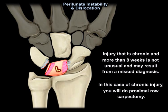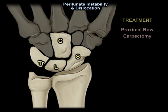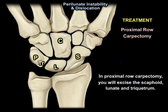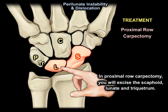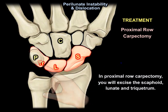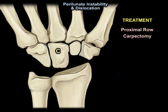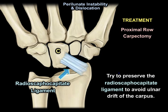Injury that is chronic and more than eight weeks is not unusual and may result from a missed diagnosis. In this case of chronic injury, you will do proximal row carpectomy — excising the scaphoid, the lunate, and the triquetrum. You will try to preserve the radioscaphocapitate ligament to avoid ulnar drift of the carpus.